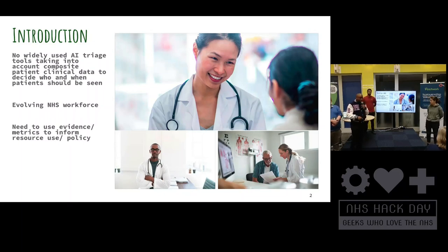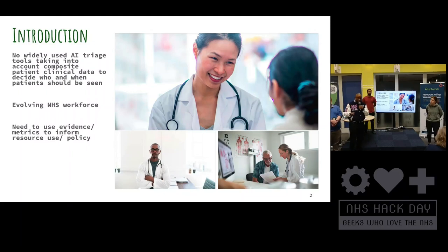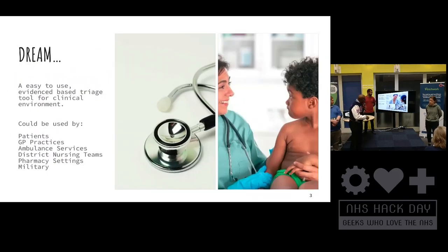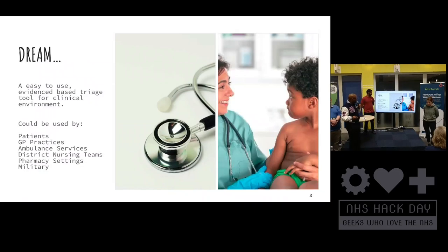We've got an evolving NHS workforce. Every day there's a new ACP, EP, ANP, NP, PA. People keep creating new roles, and again, people are not really sure who should see which person in which setting. What we want to do is try and use the patient's data to weight how important it is, and then decide who should see that person and how quickly they should see them. The dream is to have this easy-to-place triage tool for the clinical environment, usable in lots of different environments.